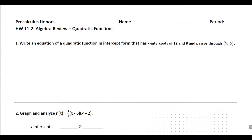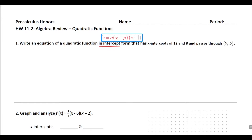Hey y'all, welcome back. Today we are reviewing quadratic functions and we're answering a bunch of questions on the homework here. So the first one says, write an equation of a quadratic function in intercept form. So just a quick little reminder, what I mean by intercept form is y equals, and then whatever your leading coefficient is, times x minus p times x minus q, where p and q are the x-intercepts.